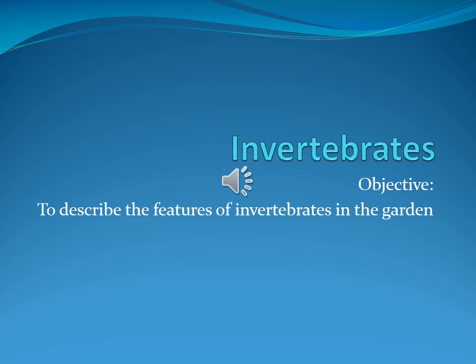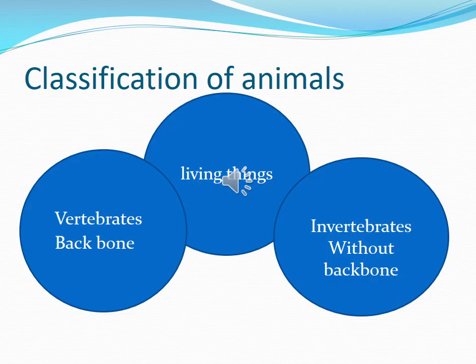The goal for today is to describe the features of invertebrates in the garden. We all know that animals are living things — they eat, they move, they breathe, they reproduce. But within the animal kingdom, there is a huge variety of animals. For instance, look at the crow and then look at the tiny butterfly, or look at the giant elephant and the gigantic whale, and then you have the speedy fox, the speedy horse, and the cheetah that runs very fast. This is the diversity of life.